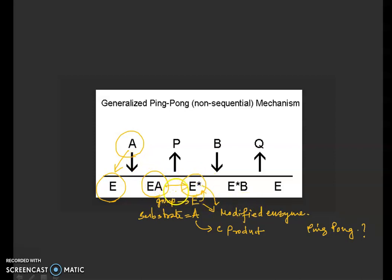It may be due to the addition of any group. Now, this A substrate will be produced as a product. As per the definition, you can see product is released just before the binding of the second substrate. B is the second substrate.